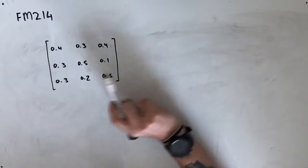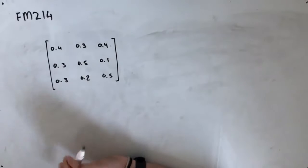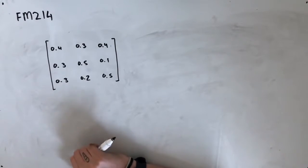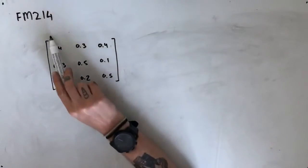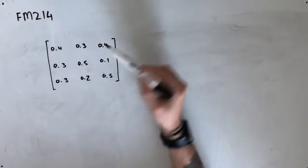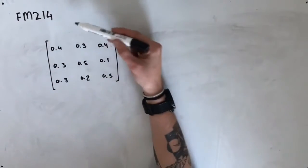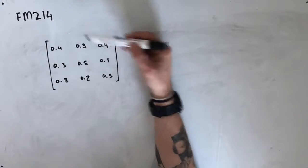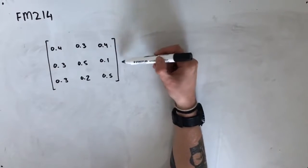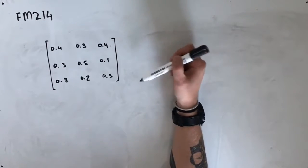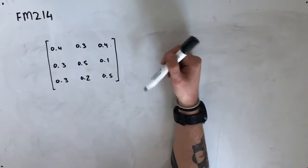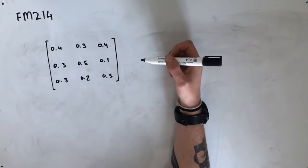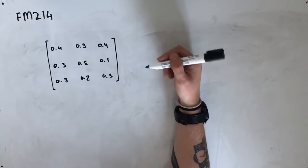We're given a transition matrix with values for ham, peanut butter, and jam from today versus ham, peanut butter, and jam tomorrow — showing the percentages of people that are moving from one choice to another.